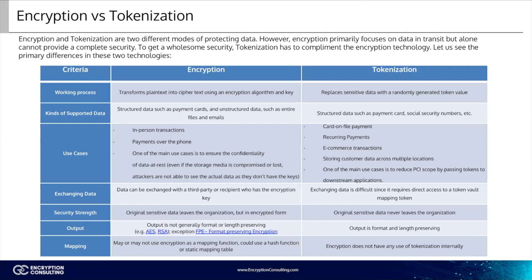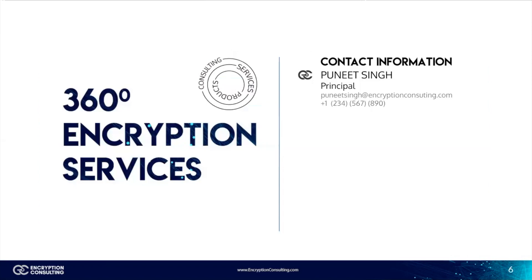Regarding security strength: for encryption, original sensitive data leaves the organization, but in its encrypted form. For tokenization, original sensitive data never leaves the organization. You may or may not use encryption as a mapping function — you could use a hash function or a static mapping table. Encryption does not have any internal use of tokenization. So the choice between encryption and tokenization is not always straightforward, and whether your organization should opt for one or the other will depend on your own requirements.